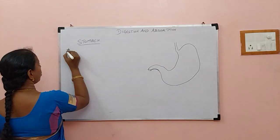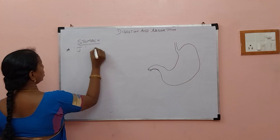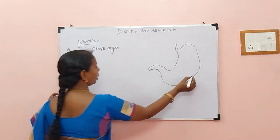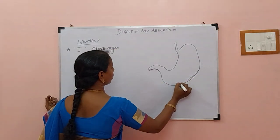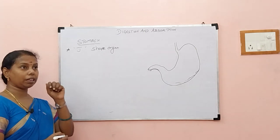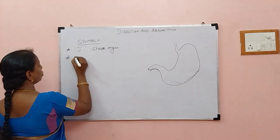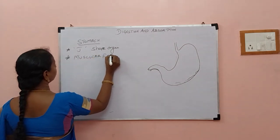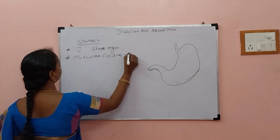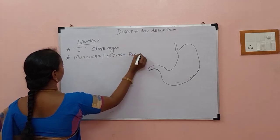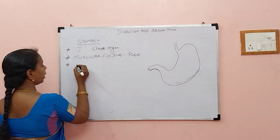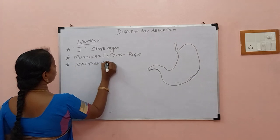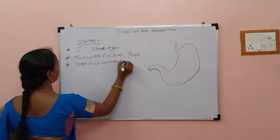Now let us proceed to the stomach. You all know the stomach — what is the shape of the stomach? It is a J-shaped organ. In the stomach we can find some foldings of muscle, like I told you when I was discussing the palate. This muscular folding we call it as rugae. And it is lined by stratified columnar epithelium.